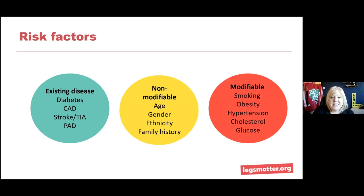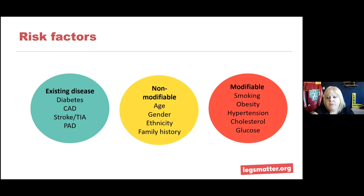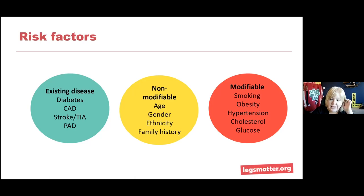There is also existing disease that may increase your risk of developing significant arterial disease. If you have diabetes, you have an extremely increased risk. If you've ever had cardiovascular disease, a stroke, a mini stroke (TIA), or if you're already known to have peripheral arterial disease, you're more likely to get further disease in other vascular beds across the body.